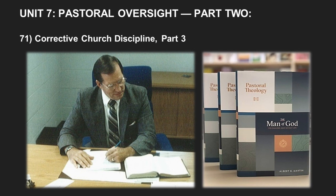Paul says, 'I forewarn you, even as I did forewarn you, that they who practice such things shall not inherit the kingdom of God.' Anything that can in the judgment of good sense be called a pattern of any one or combination of these things is inconsistent with a man being an heir of the kingdom. Therefore the church must deal with such and make sure that they do not maintain a status as members in good standing. And as surely as we would not leave our membership open to a chronic drunkard, to a chronic fornicator, neither must we to a chronically strife-producing, jealous, wrathful person. My Bible says that.